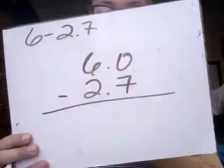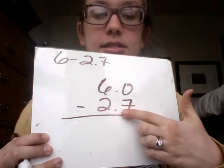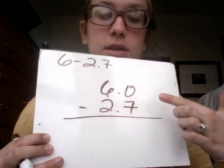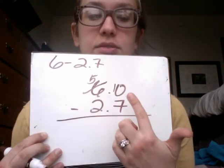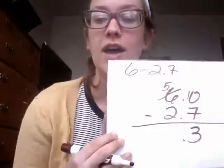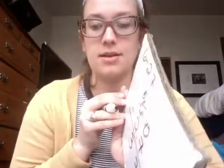I'm going to set it up vertically. Notice here — I don't need a hundredths place. I cannot subtract seven from zero tenths, so I'm going to have to rename my six. I have five ones left — I traded one of my ones in for ten tenths. Ten minus seven is three. Five ones minus two ones is three.